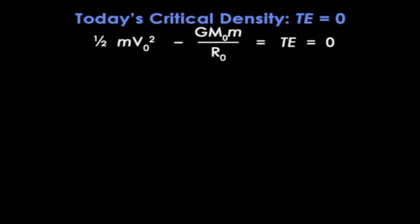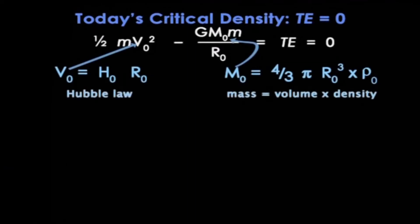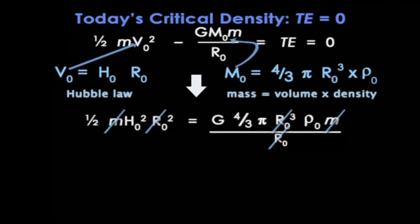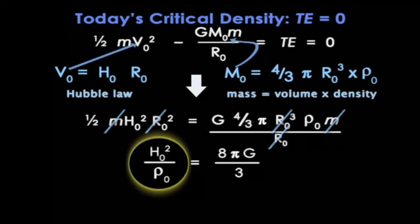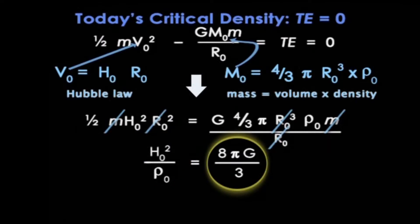So, back to our equation for zero total energy. Let's insert our expressions for v₀ and M₀, and nicely, the little m's and the big R₀'s all cancel, and we're left with a rather simple expression. If the ratio of the Hubble constant squared to the sphere's density is equal to this number, 8πG/3, then the expansion is on the knife edge between eventual re-collapse and infinite expansion.